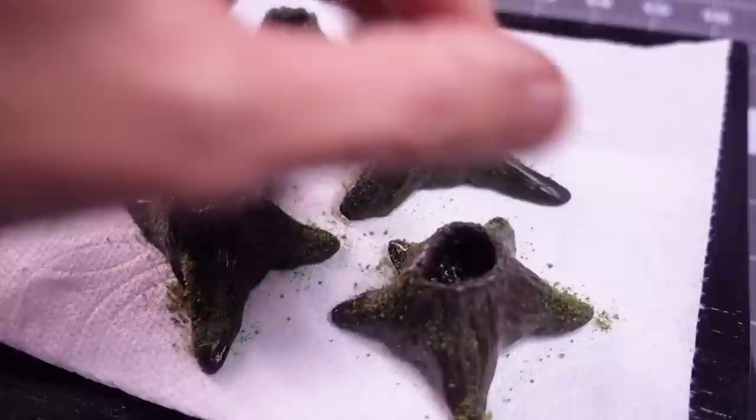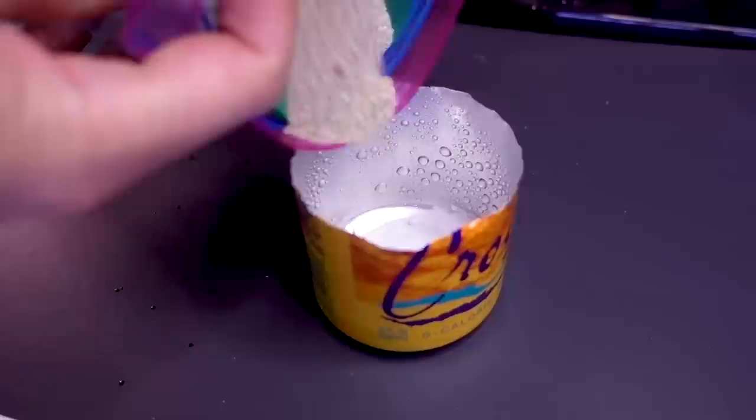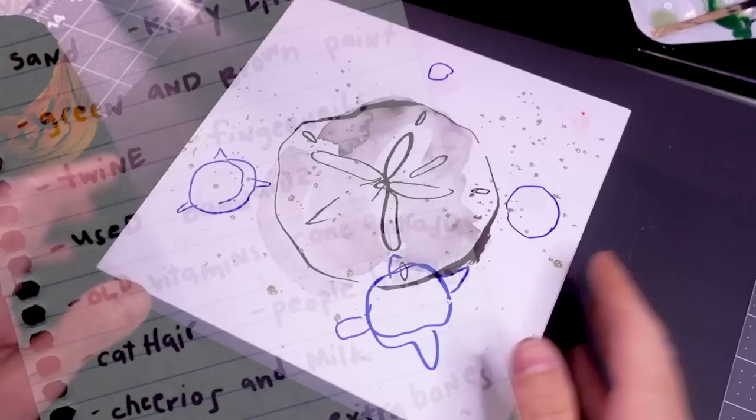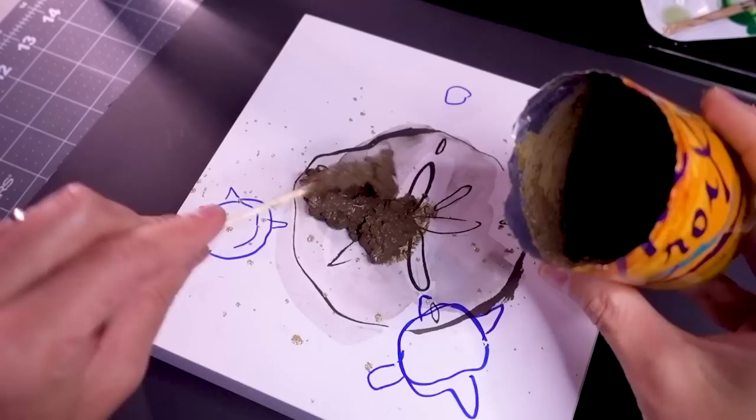To give the ground a swampy, muddy look, I made a texture paste with water, baking soda, sand, non-clumping kitty litter, green and brown paint, bits of twine, fingernail clippings, used band-aids, some vitamins I found under the fridge, an entire avocado. Okay, I'm joking of course about those last few, but I do think the next time I make this, I'll just empty out the vacuum cleaner and mix in some Mod Podge.